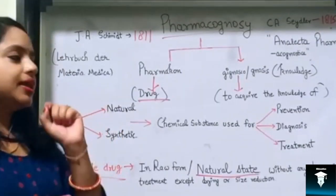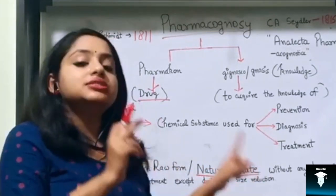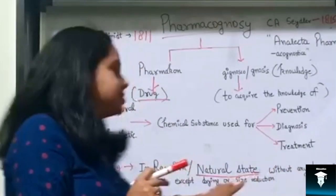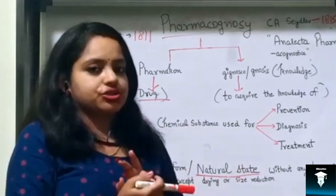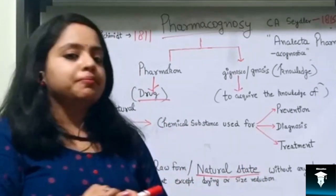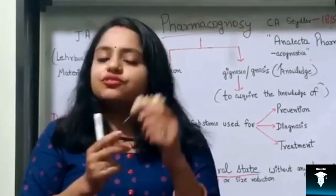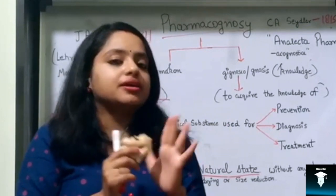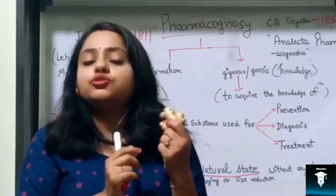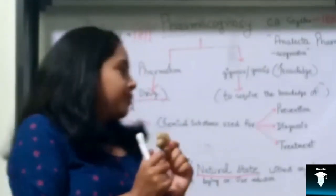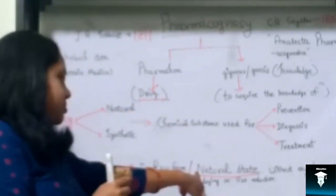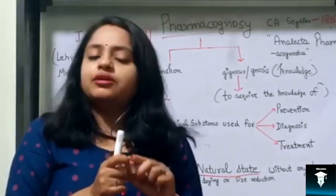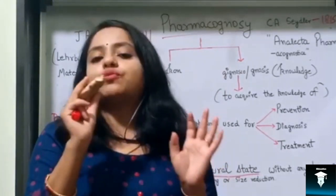In Pharmacognosy, we study about crude drugs. A crude drug is that drug which is collected in its raw, natural state which has not been processed, except for drying or size reduction. For example, ginger — its fresh as well as dry rhizome can be used as a drug. It has various medicinal values: it can be used as a stomachic, aromatic stimulant, flavoring agent, and in nausea mainly due to morning sickness. So it is a crude drug because we use it in its natural state without any processing.